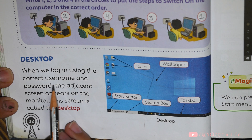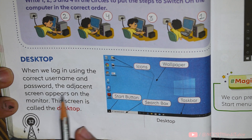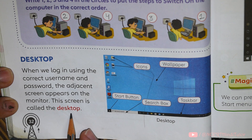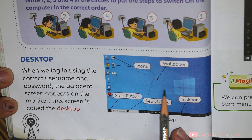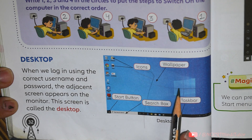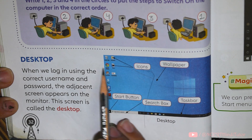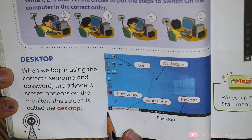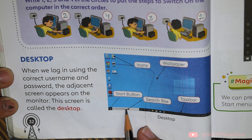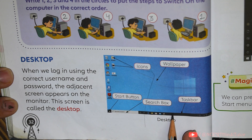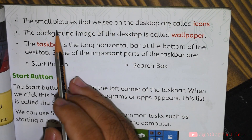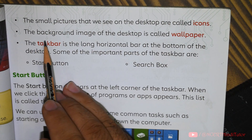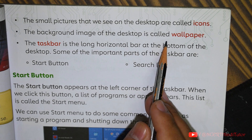Desktop. When we log in using the correct username and password, the adjacent screen appears on the monitor. This screen is called the desktop. As you can see in the photo, this is the picture of a desktop. The wallpaper, small icons, the start button, search box, and taskbar are all visible.